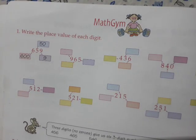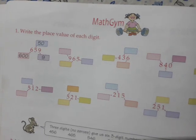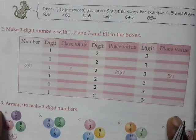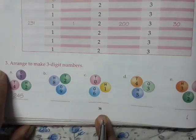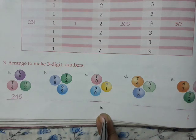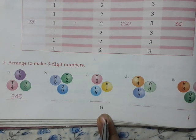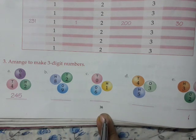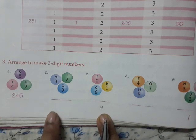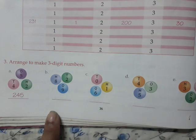On the next page, page number 36, you are going to write the place value of each digit — you can see it in your junior math book. I hope you have understood how to write the place value of each number. In my next video we will meet again with a new topic. Namaste!